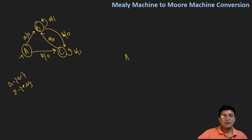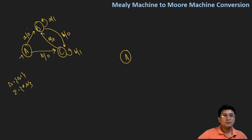Now, since we have to convert this, I will refer to the states in the Mealy machine. There are three states in the Mealy machine, but the Moore machine can have more states — we can determine this by checking the transitions. State A will not have any output associated with it because there is no transition ending at state A. State A goes to B by taking symbol 'a' and produces output zero. State C goes to B by taking 'a' but produces output zero. State B, when taking input 'a', goes to B itself and produces output one.